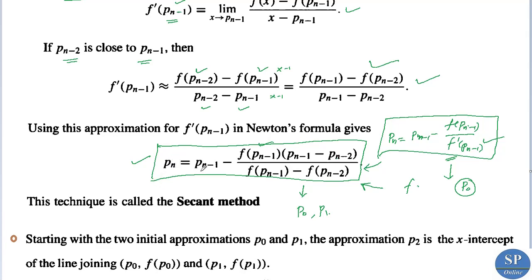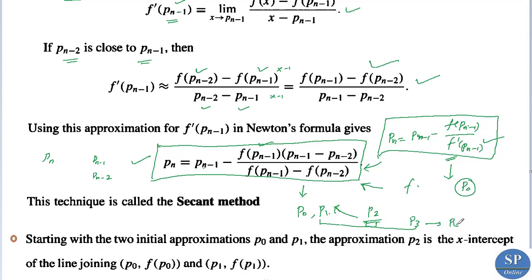The iterative formula is: p_n = p_{n−1} − f(p_{n−1}) · (p_{n−1} − p_{n−2}) / [f(p_{n−1}) − f(p_{n−2})]. So to find p_n, we need p_{n−1} and p_{n−2}. For example, to find P2 (n = 2): P2 = P1 − f(P1) · (P1 − P0) / [f(P1) − f(P0)]. Then to find P3 we need P1 and P2; using P2 and P3 we can find P4, and so on.